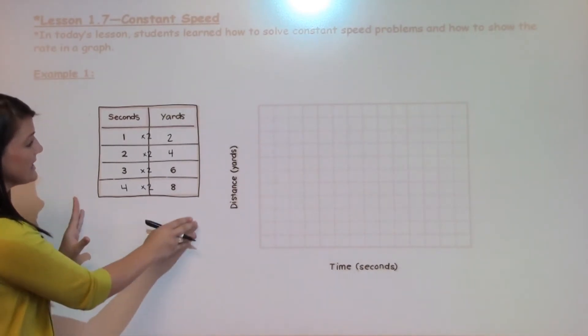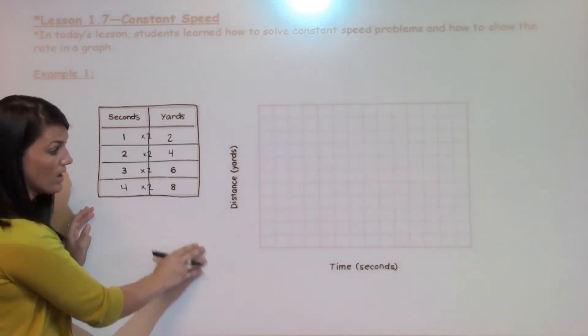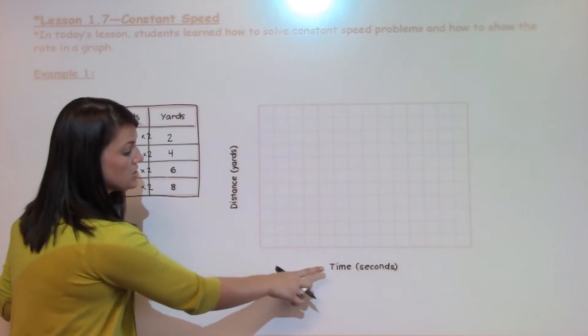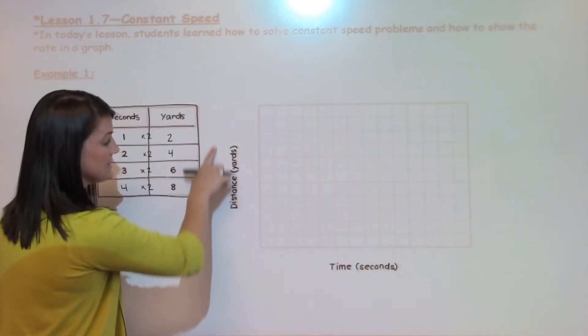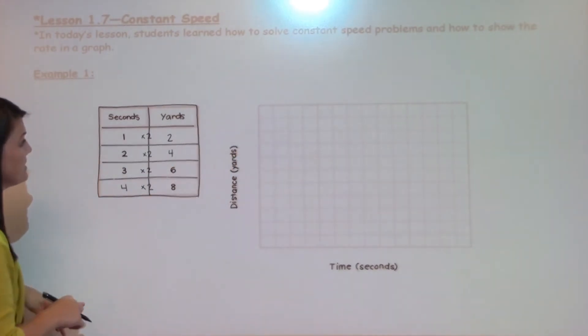Now what I want to do is take the information from the rate table and apply it to a graph. Here I have time going across my x-axis and distance going up my y-axis.